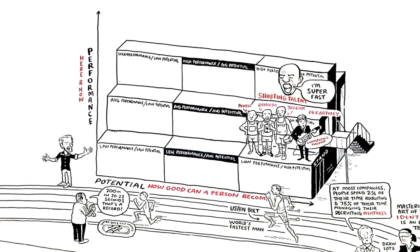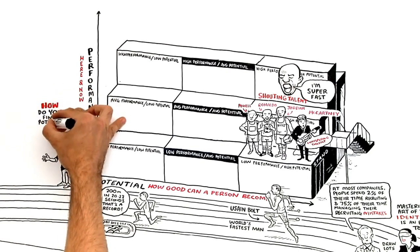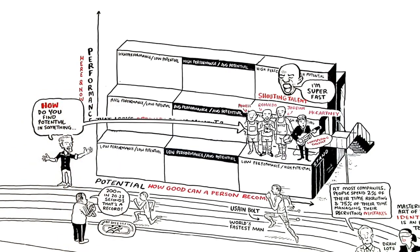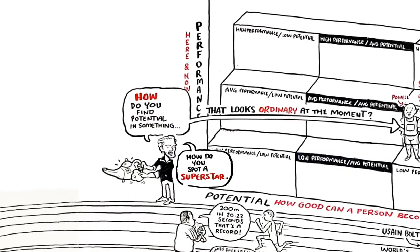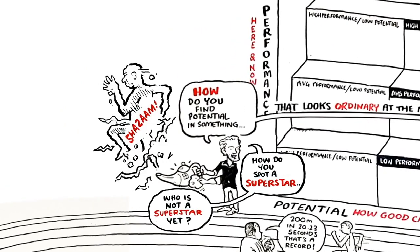And that's just the point. How do you find potential in something that looks ordinary at the moment? How do you spot a superstar who is not yet a superstar?